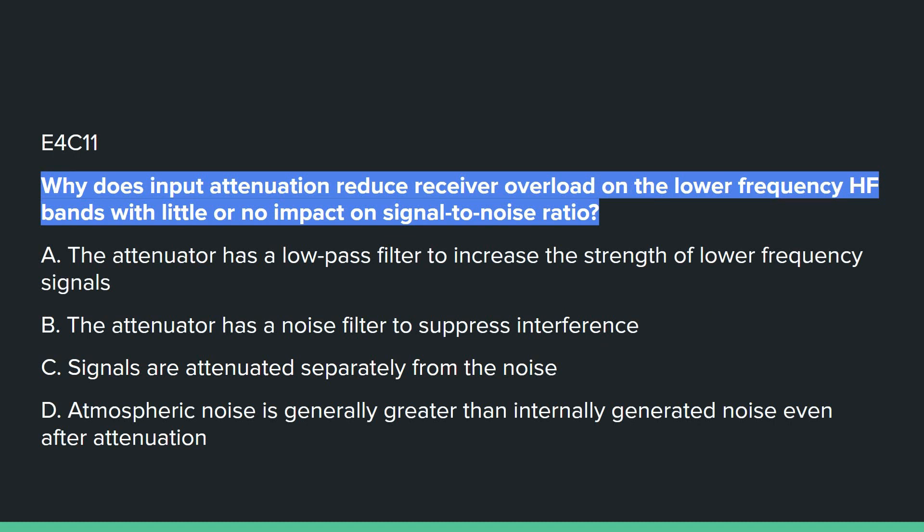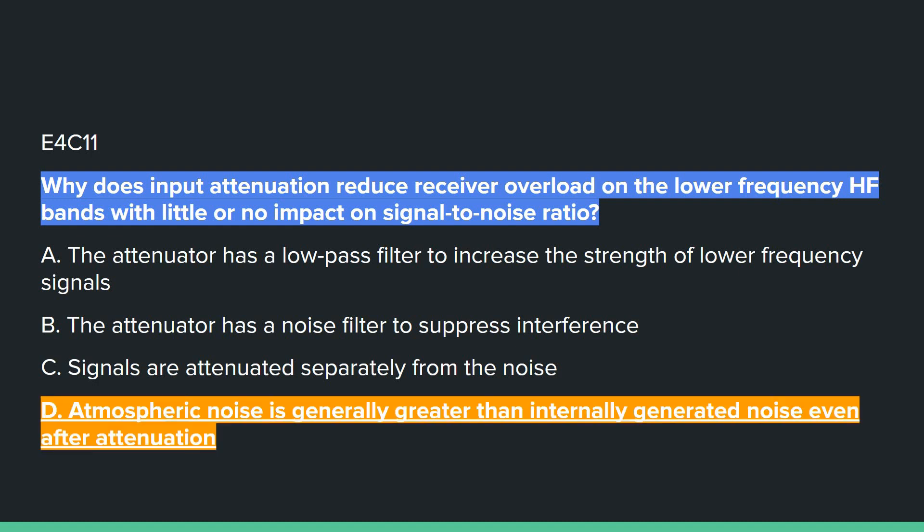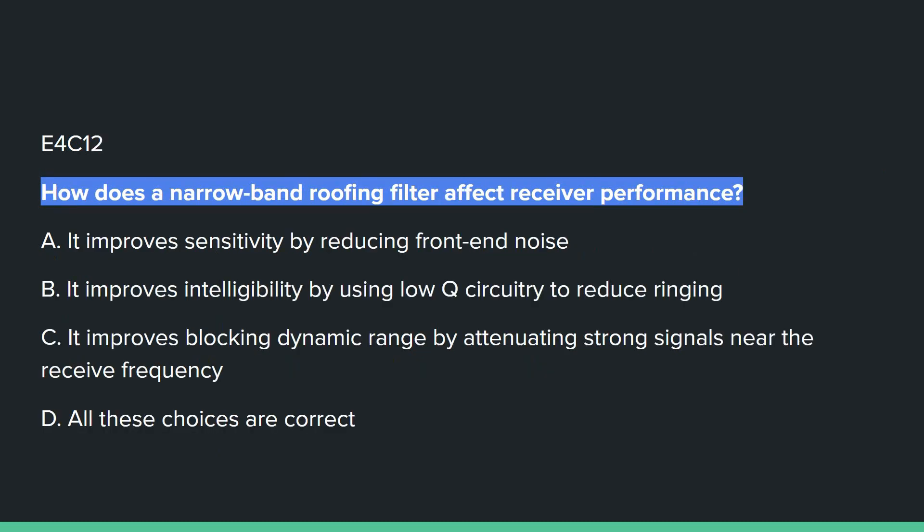E4C11: Why does input attenuation reduce receiver overload at the lower frequency HF bands with little or no impact on signal-to-noise ratio? Answer D: atmospheric noise is generally greater than internally created noise even after attenuation.